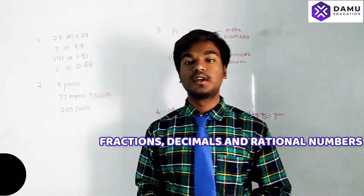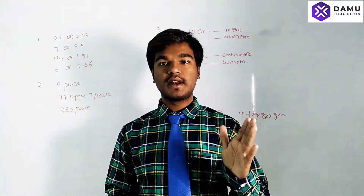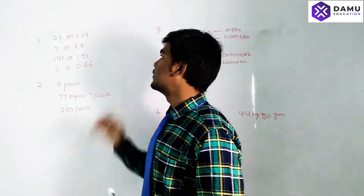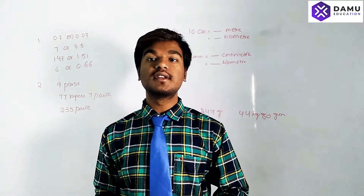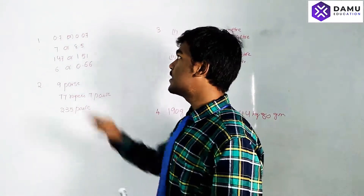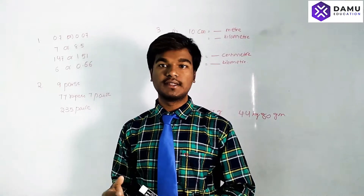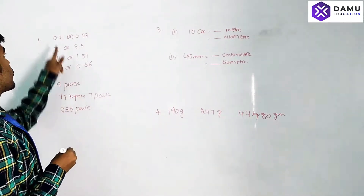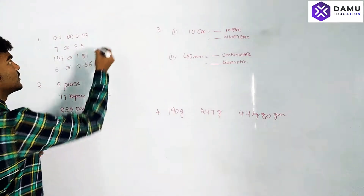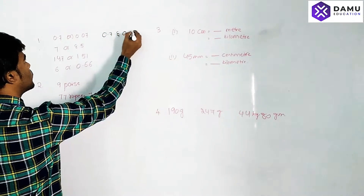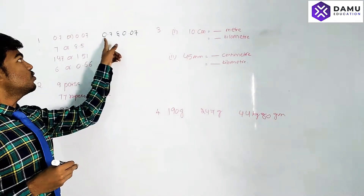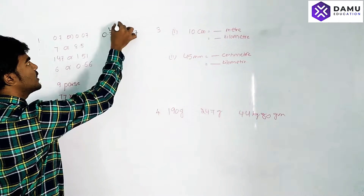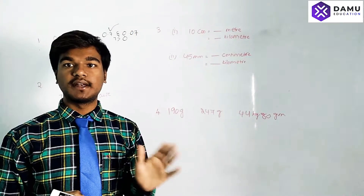We will start from the left side. From the left side, whichever place is greater, that is the greater number. So here 0.7 and 0.07 — both have zero point. Then comparing the next digit: seven versus zero. Seven is greater than zero, so 0.7 is the greater number.